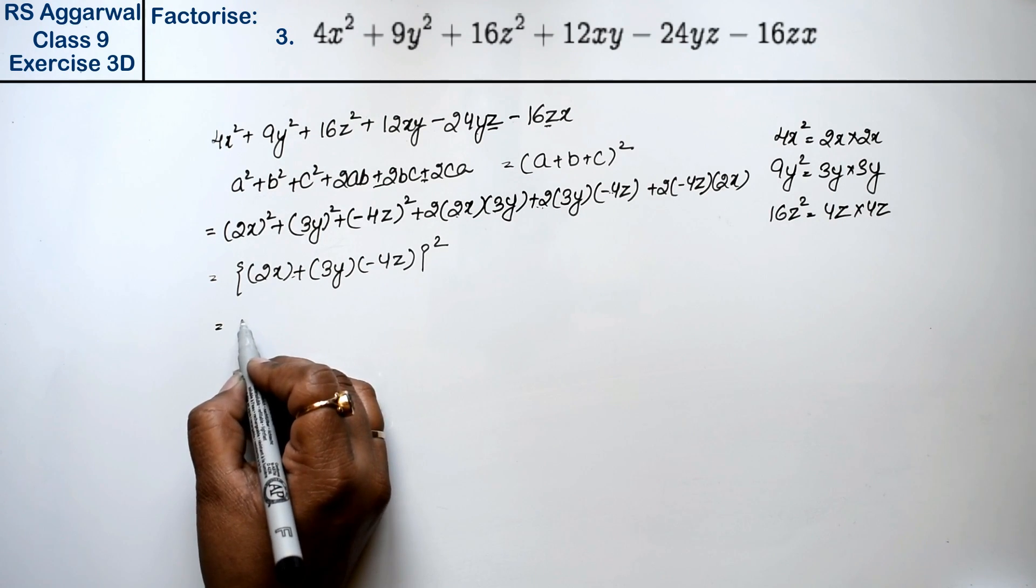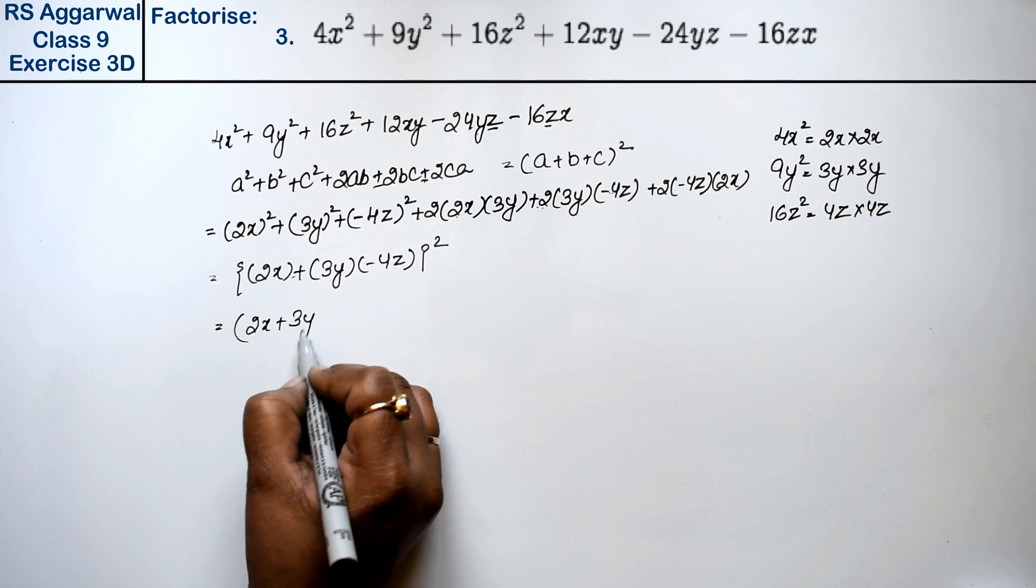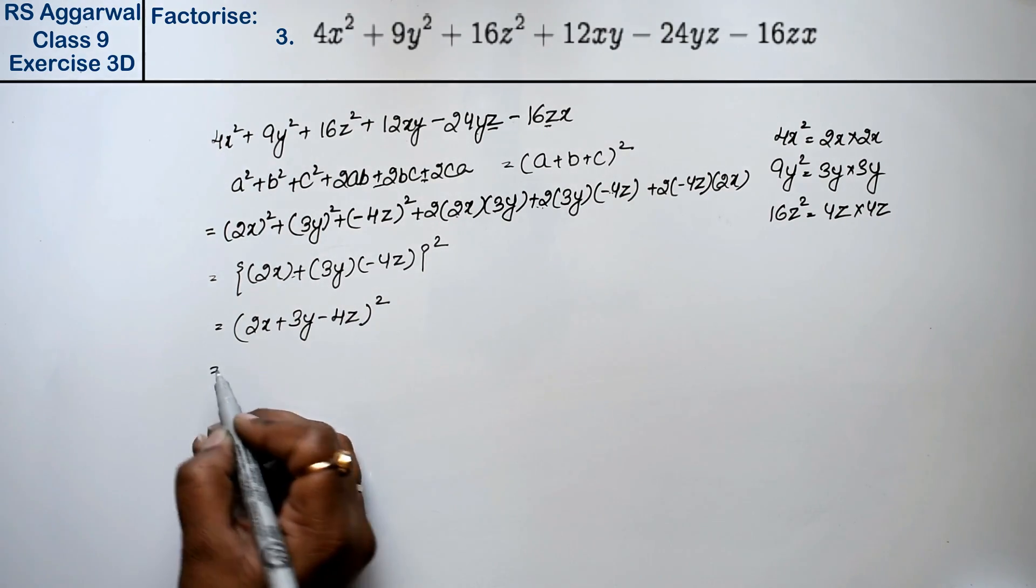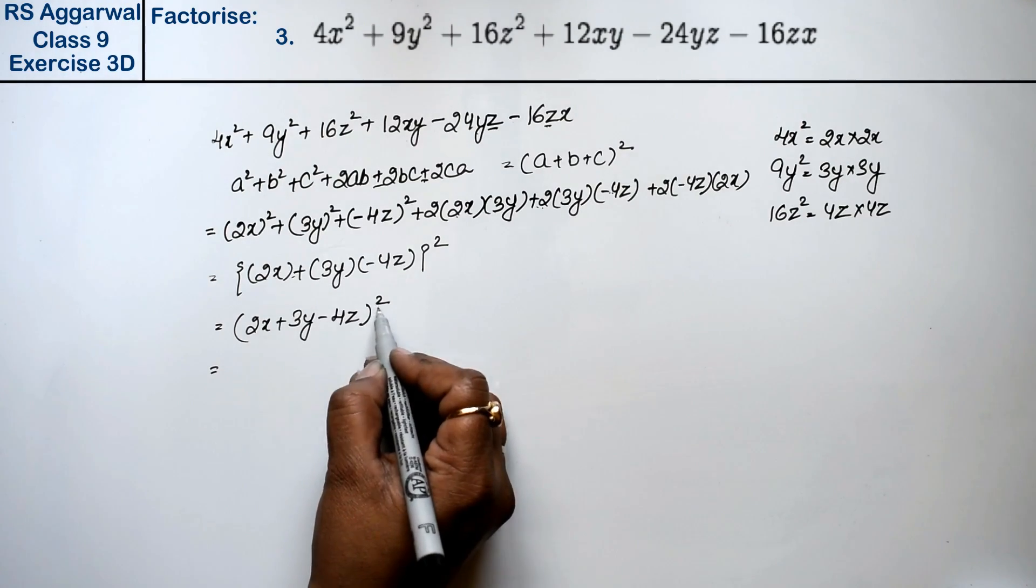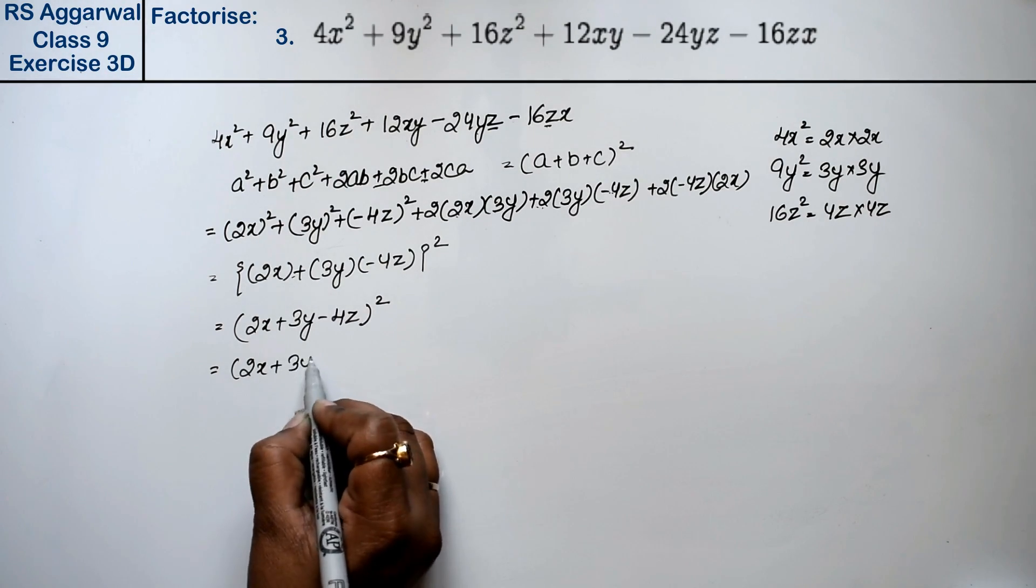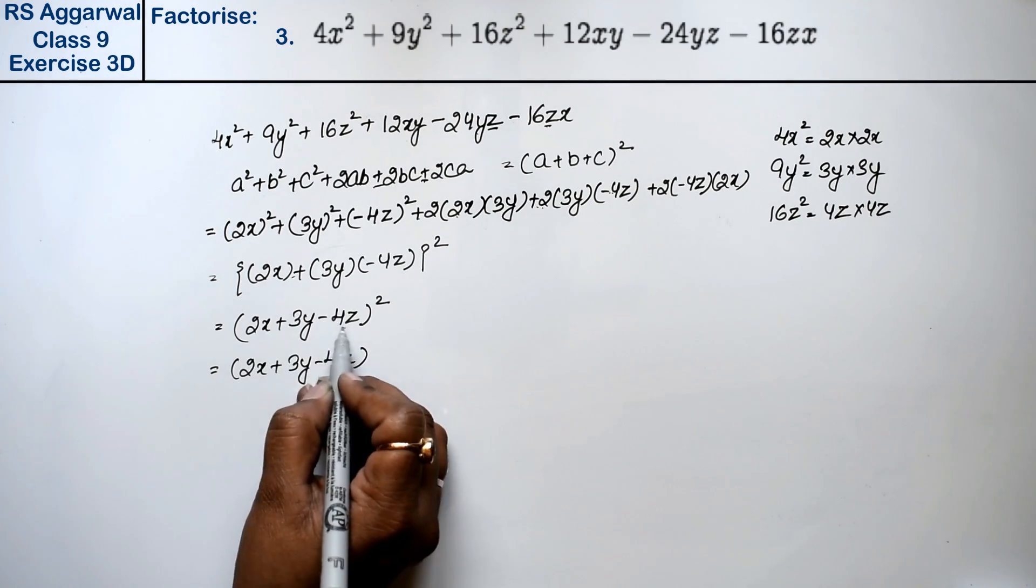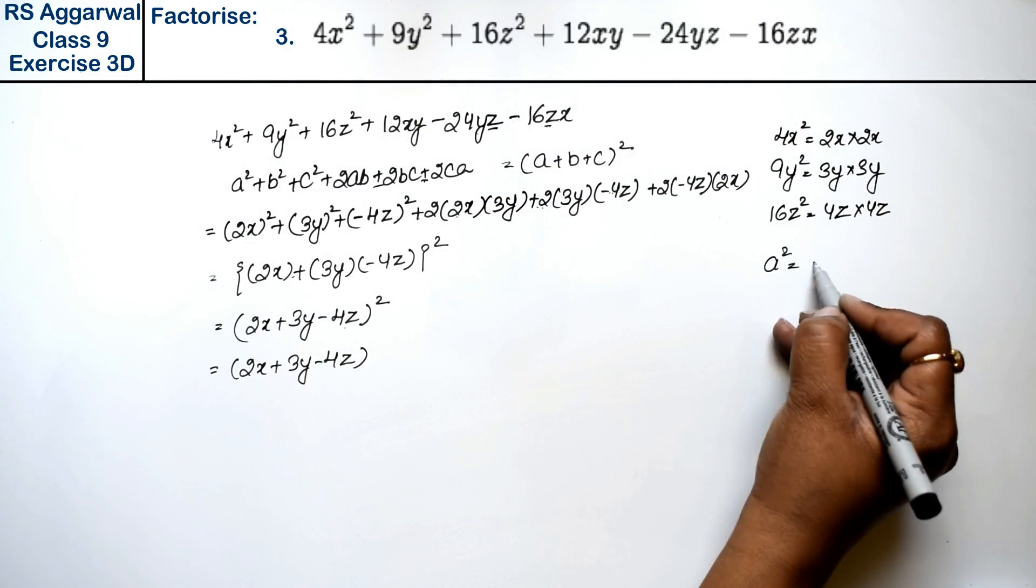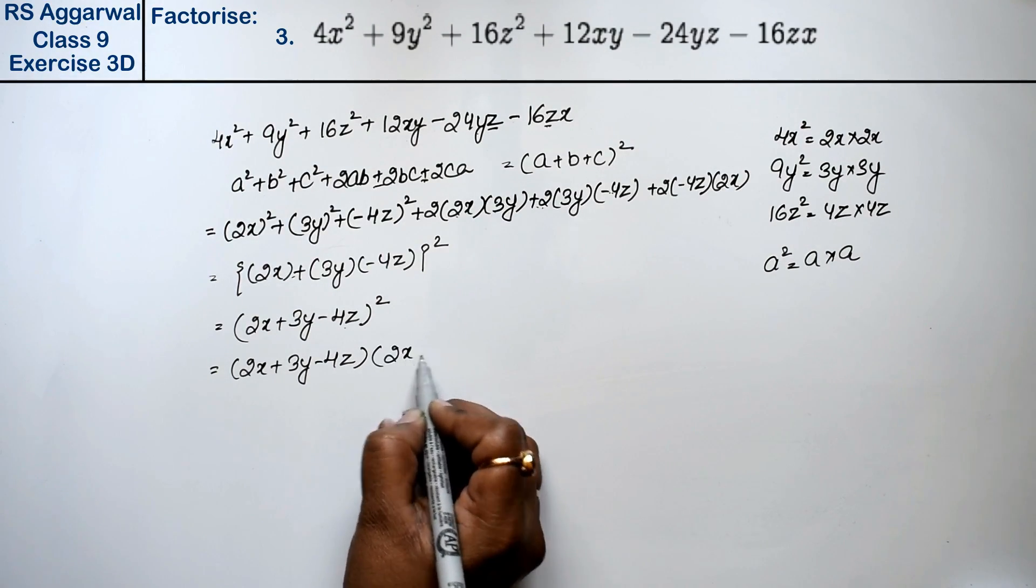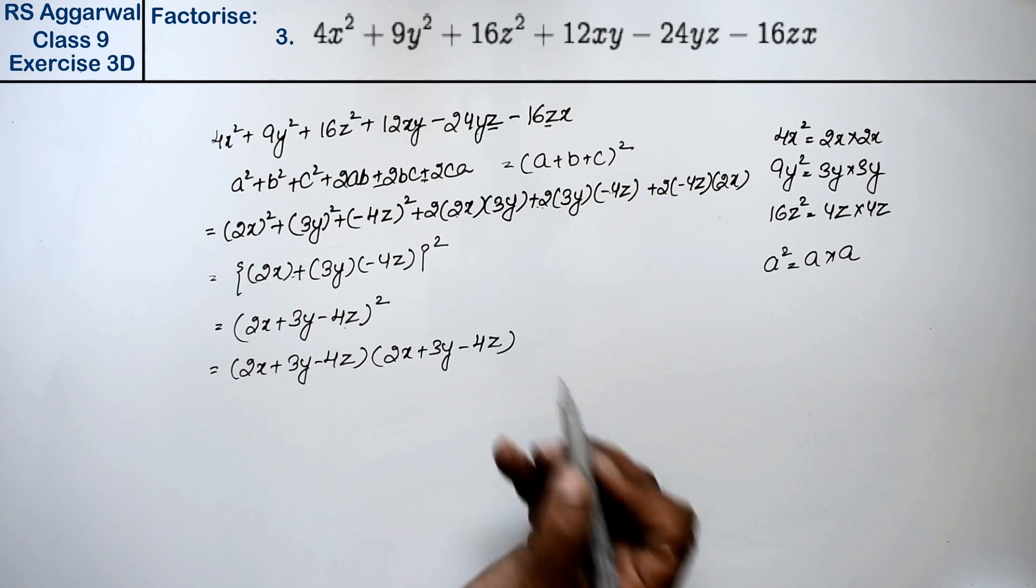Now we open brackets. So what is this? 2x + 3y - 4z whole square. Now if we have to factorize, then we have to solve this square. So 2x + 3y - 4z, square means this value two times. So 2x + 3y - 4z is the answer.